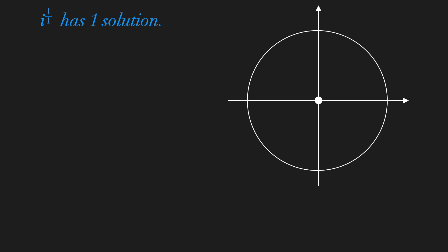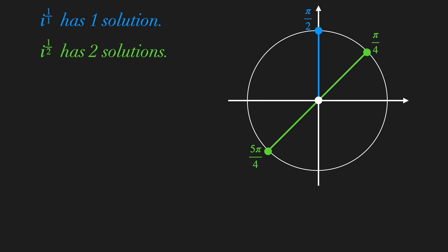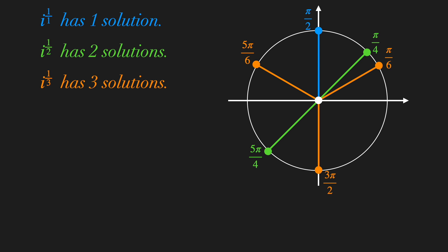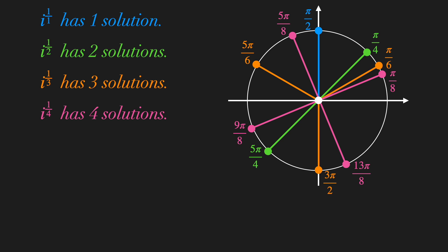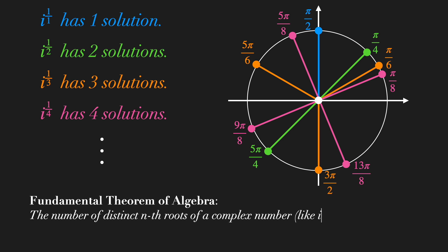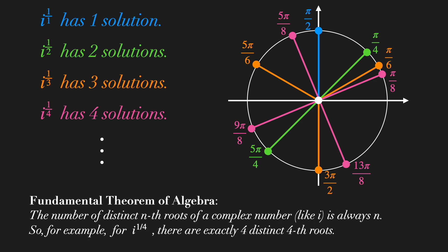Let's gather everything we found and put it together. The imaginary unit has just one solution: pi over 2. The square root of i has two solutions: pi over 4 and 5pi over 4. The cubic root of i has three solutions: pi over 6, 5pi over 6, and 3pi over 2. The fourth root of i has four solutions: pi over 8, 5pi over 8, 9pi over 8, and 13pi over 8. This result makes sense, since the fundamental theorem of algebra states that the number of distinct nth roots of a complex number is always n — so the fourth root of i has exactly four distinct fourth roots.